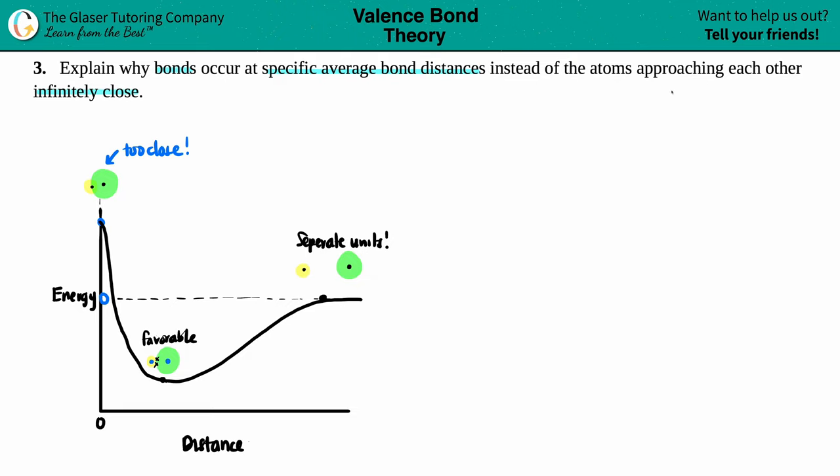So what's happening when those atoms are approaching each other infinitely close? As the atoms are getting very close, I mean infinitely close. Remember, they're trying to bond, so one electron, and it doesn't really matter what the atom is, but one electron from one atom is trying to react with one electron on the other. But remember, electrons are the same charge, and what happens to charges when they get too close? They start repelling each other, and that's a big no-no.